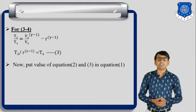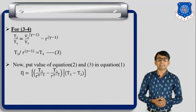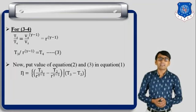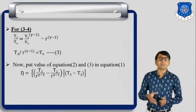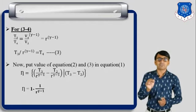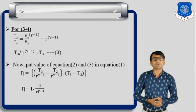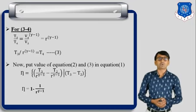Substituting equations 2 and 3 into equation 1, we get efficiency equals 1 minus [(T3/R^(γ-1) - T2/R^(γ-1)) / (T3 - T2)]. The (T3 - T2) terms cancel out, giving the efficiency of the Otto cycle as: eta = 1 minus 1/R^(γ-1), where R is the compression ratio and gamma is the adiabatic index, equal to 1.4 for air.